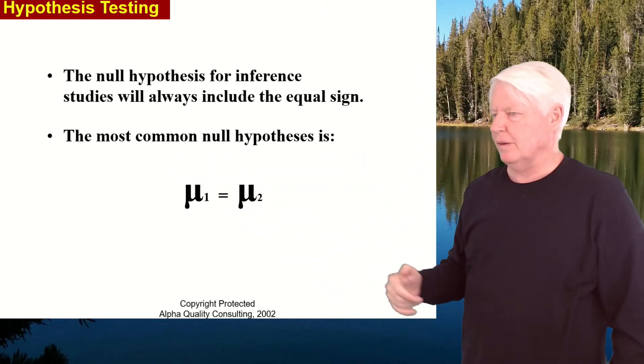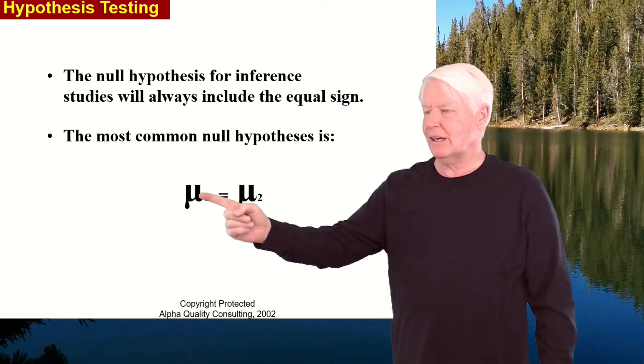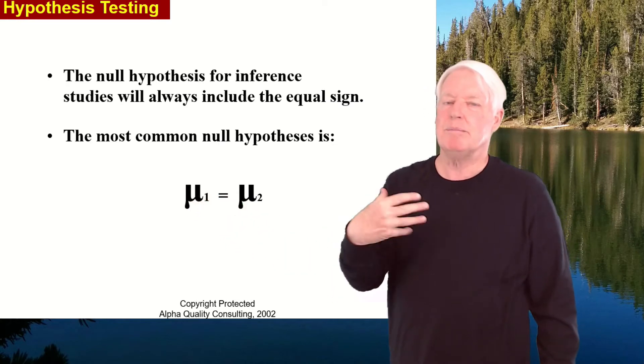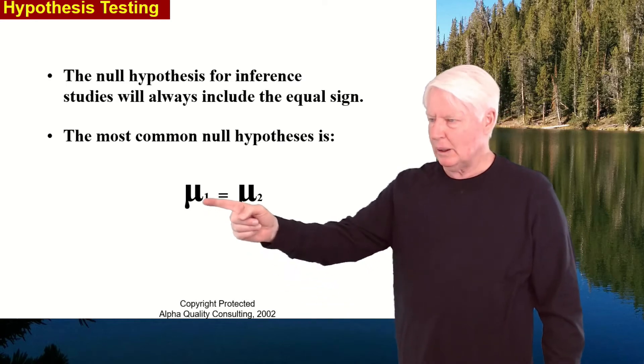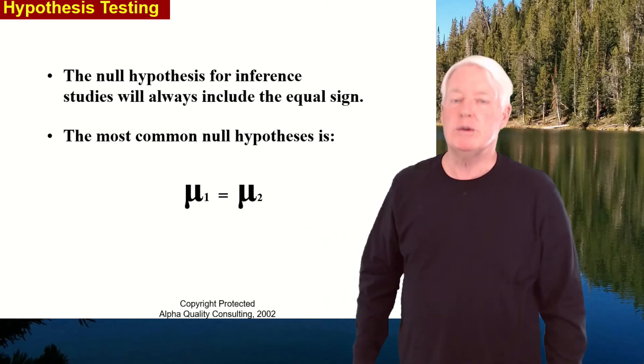One of the more common null hypotheses is, remember this Greek symbol mu means population average. So population average one equals population average two, or mu one equals mu two.